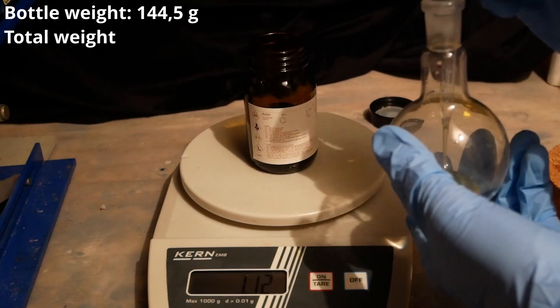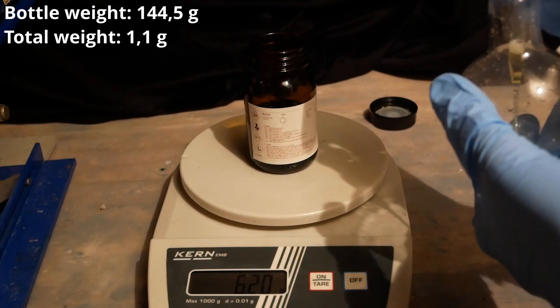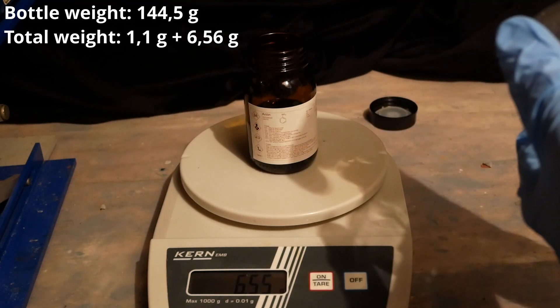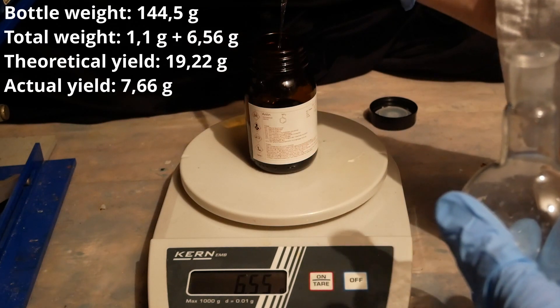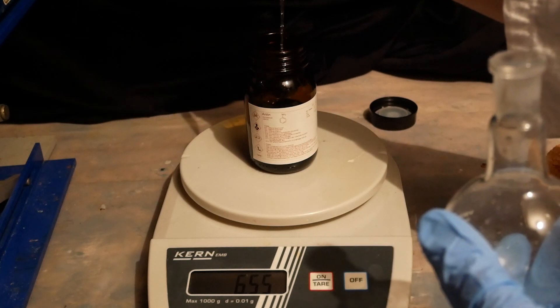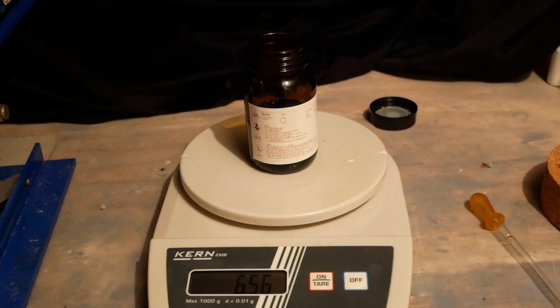I accidentally didn't tare the scale right away and put a gram in the bottle before, but together with the six and a half grams on the scale, our total yield comes out to be 7.66 grams, which gives us a 40% yield, meaning the yield is effectively doubled, and my ego is pleased.